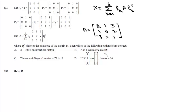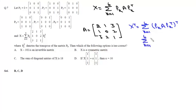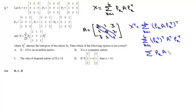Now we will start with part B: X is a symmetric matrix. If we take its transpose, X transpose will be the summation k from 1 to 6 of (pk·A·pkᵀ)ᵀ, which by the reversal law becomes pk·Aᵀ·pkᵀ. Since A is symmetric, Aᵀ = A, giving us X transpose equals X, which means X is a symmetric matrix.